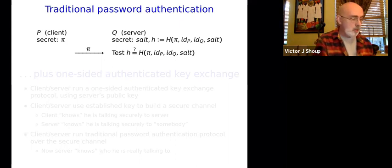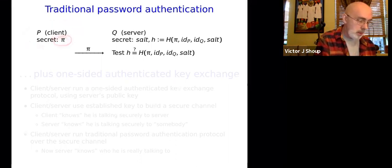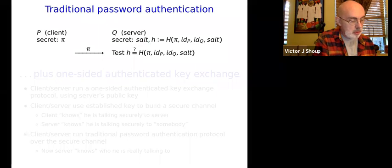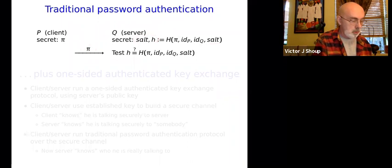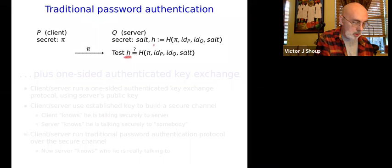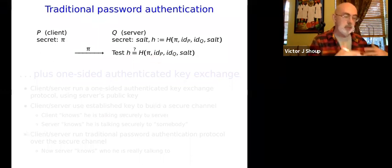Let me start with some background, going back to the olden days where we just had traditional password authentication protocols. We have a client with a secret password pi, and a server who stores some salt along with a hash value — a hash of the password, identifying information of the client and server, and the salt. When the client wants to log in, he sends his password to the server. The server hashes the password along with the identifying information and the salt, and tests whether that hash value matches the stored one. That's how things worked back in the 1970s or 80s.